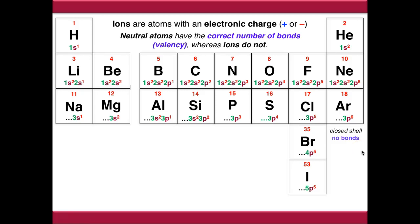All the other atoms in the periodic table are going to have to form bonds in order to achieve that closed shell configuration. If we move across to the halogens, the next column across, we'll notice that all of the outer shell configurations are P5: so 2P5, 3P5, 4P5.